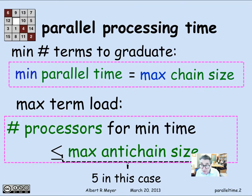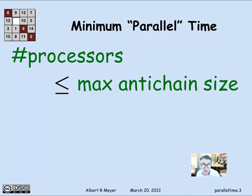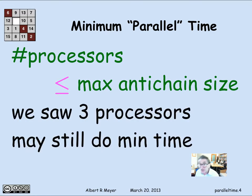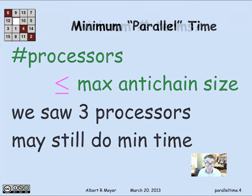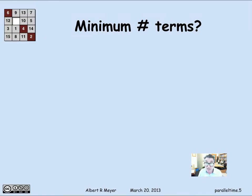That's an upper bound on the number of processors needed to achieve minimum time. But it's a coarse upper bound, because although the number of processors needed to achieve minimum parallel time is at most the maximum anti-chain size, in the previous example you could actually get away with three processors. It was possible to schedule the subjects so you only took three courses a term and still finished in minimum time.